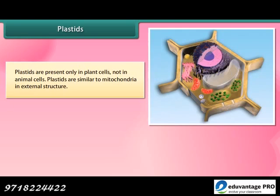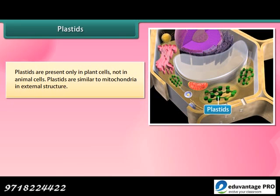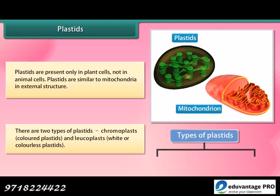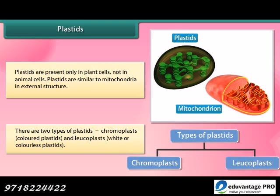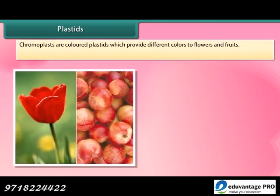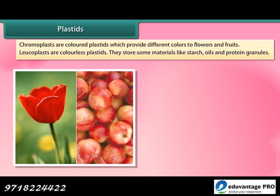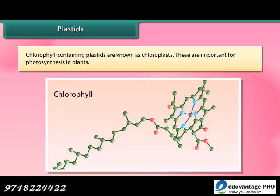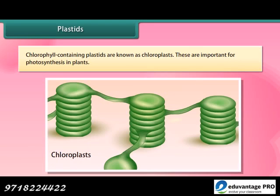Plastids are present only in plant cells, not in animal cells. Plastids are similar to mitochondria in external structure. There are two types of plastids: chromoplasts — colored plastids — and leucoplasts — white or colorless plastids. Chromoplasts provide different colors to flowers and fruits. Leucoplasts are colorless plastids that store materials like starch, oils and protein granules. Chlorophyll-containing plastids are known as chloroplasts, which are important for photosynthesis in plants.